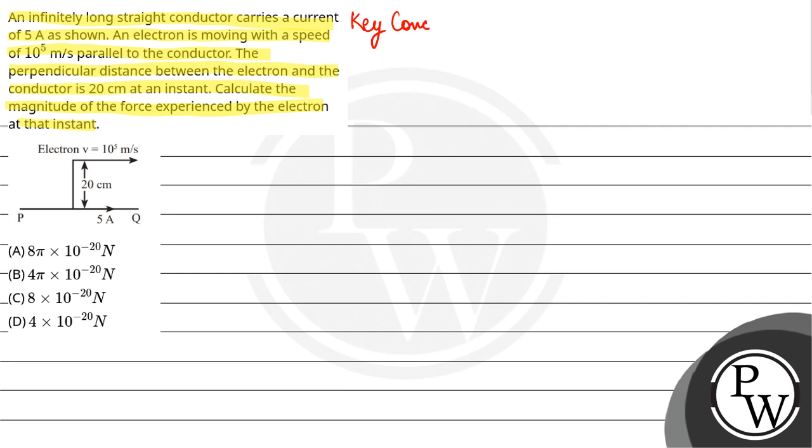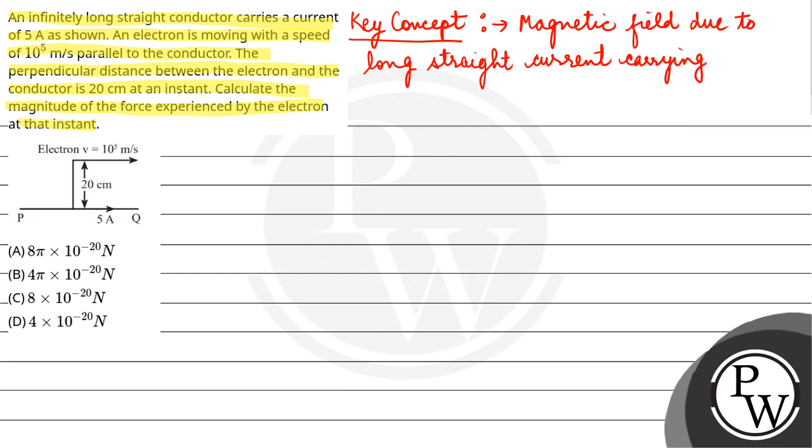Watch out here, our key concept is magnetic field due to long straight current carrying conductor. B is equal to mu naught i by 2 pi r, where i is the current and we are finding the magnetic field at the distance r.